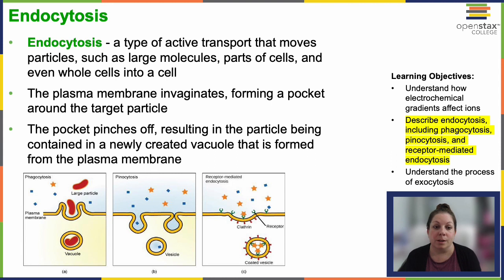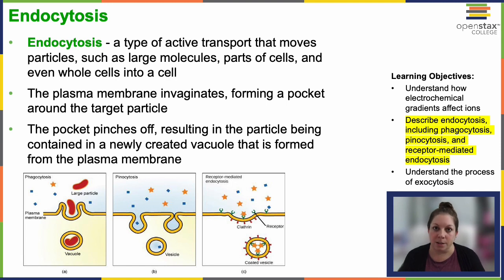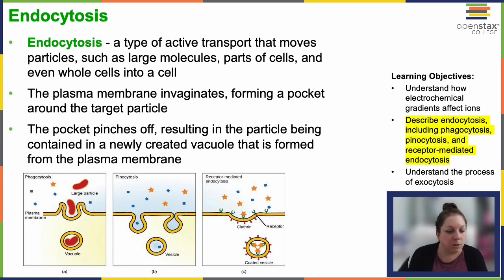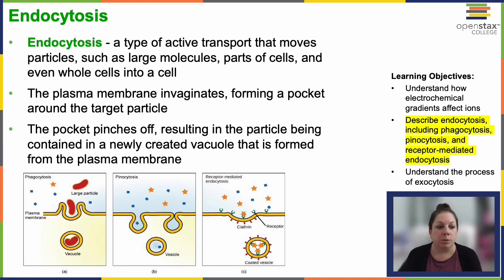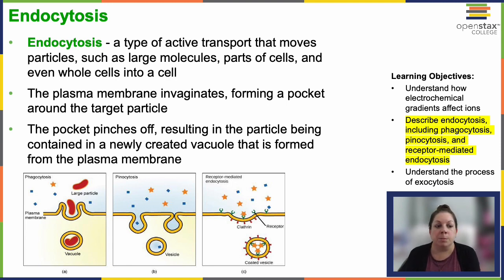Another type of active transport — and this is big active transport — is endocytosis. This is a type of cell transport that moves particles, large molecules, parts of a cell, or even whole cells into the organism — whole cells like bacteria usually. The plasma membrane folds in and invaginates, forming a little pocket, as you can see in the picture. These little pockets come back together, pinch off, and pull whatever was outside into the cell, creating a new vacuole. That vacuole might fuse with a lysosome or any number of other targets inside the cell for further use.